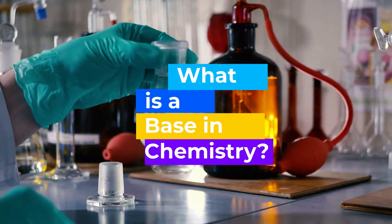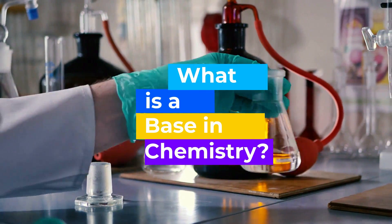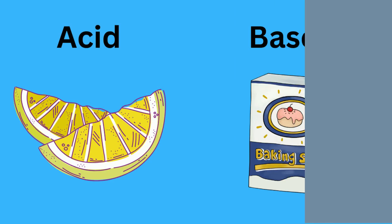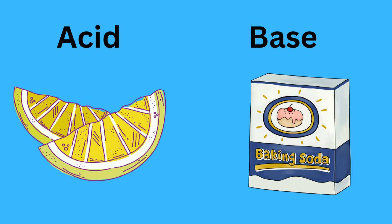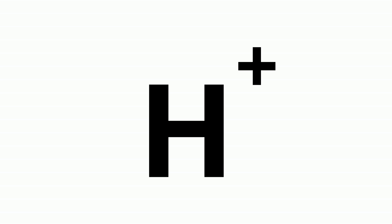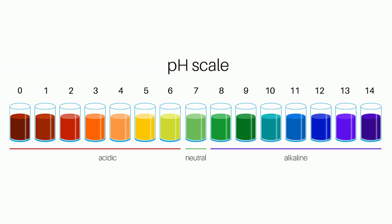What is a base in chemistry? Let's start with the difference between an acid and a base. The acidity of a solution is measured by its number of hydrogen ions. You can look up this measure on a pH scale. The abbreviation pH stands for potential hydrogen, and it's a measure of how much hydrogen is in the solution and how active the hydrogen ion is.